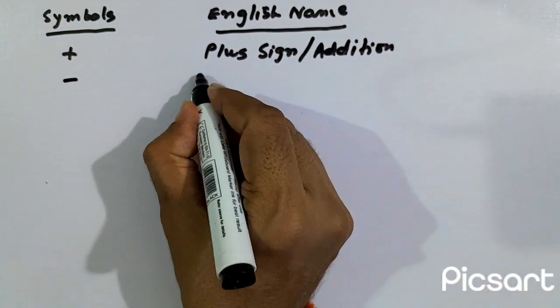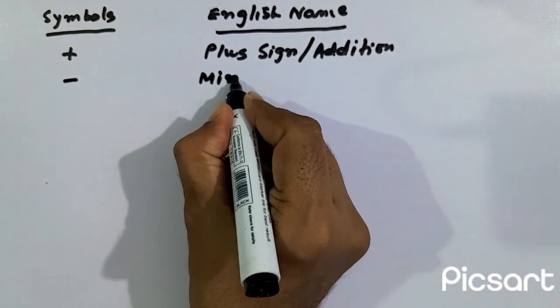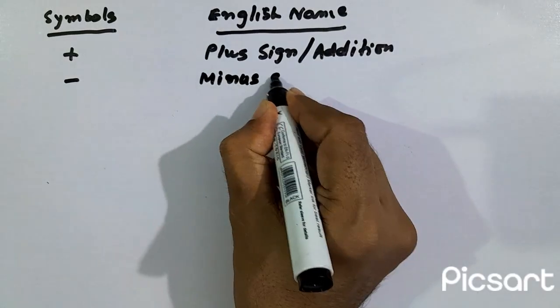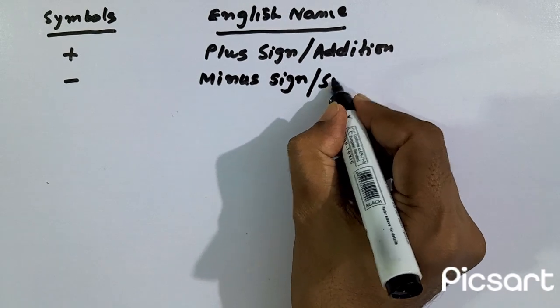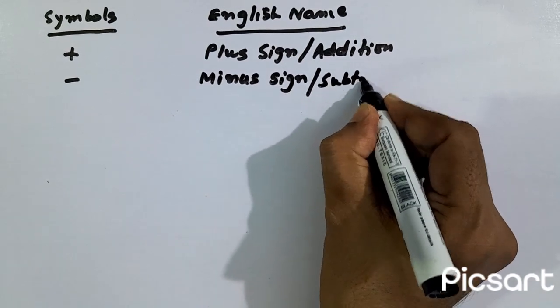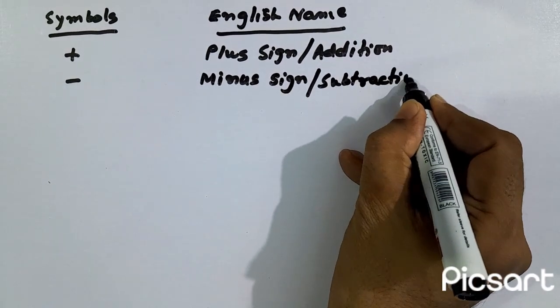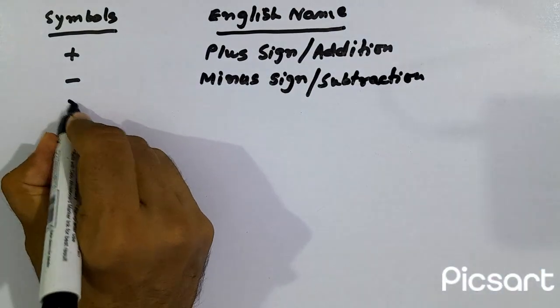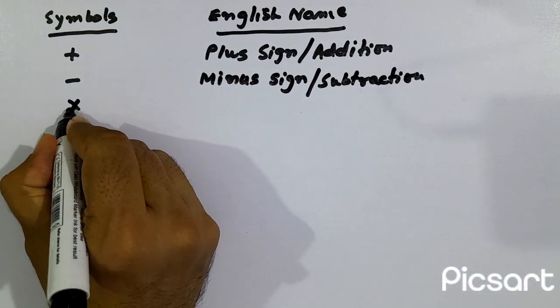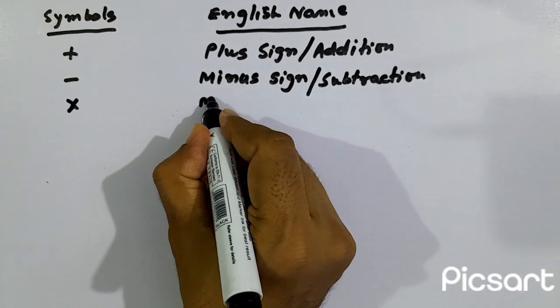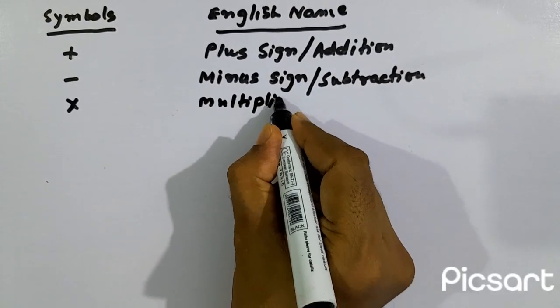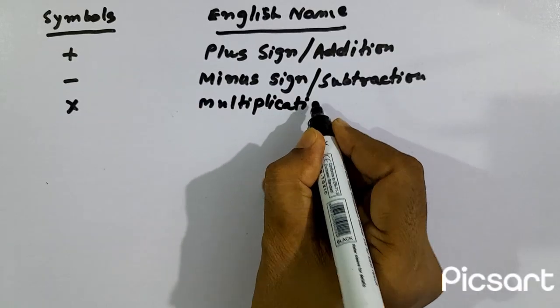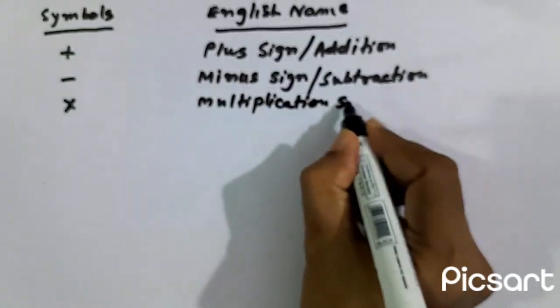This symbol is known as minus sign or subtraction. This symbol is called multiplication sign.